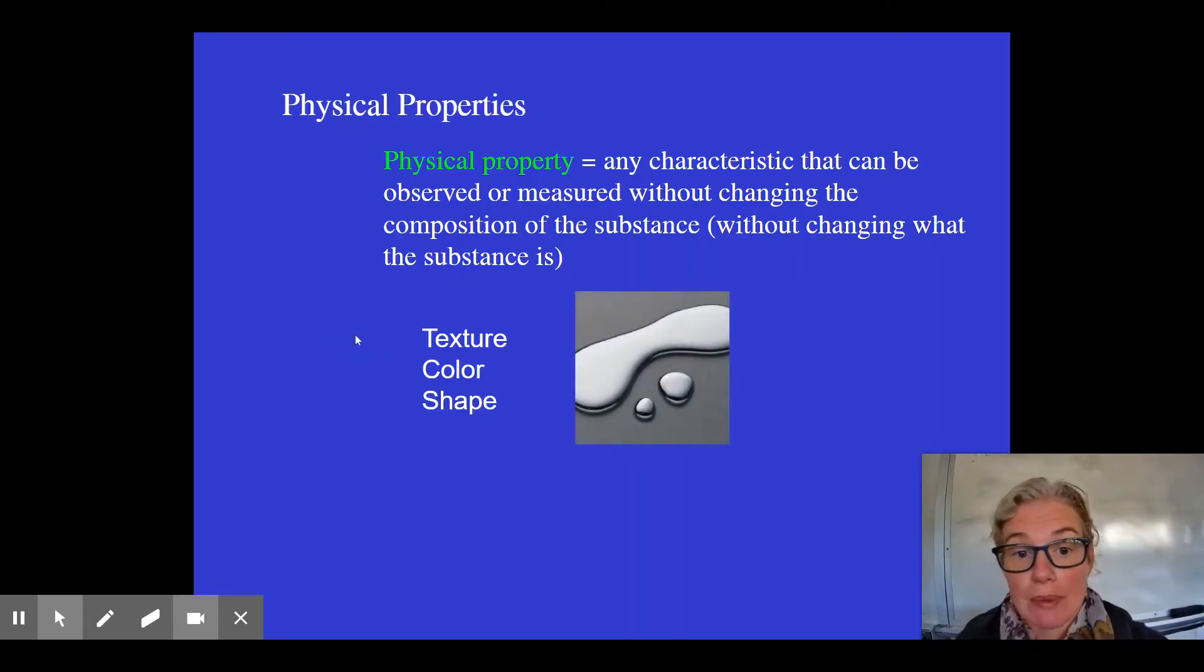For example, if we talk about mercury, mercury is a shiny metal that at room temperature will be a liquid.